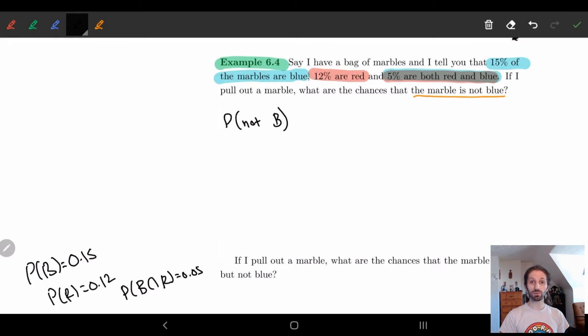So we're asking what's the probability of not blue? So this is the probability of B complement. Well what is this? This is just 1 minus P(B). And this is coming from the complement rule. And then here we can just plug in our number because we already know what P of B is. So 1 minus 15 percent is 0.85. That gives me 85 percent.